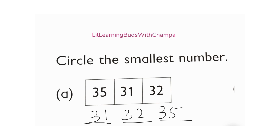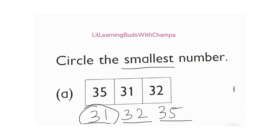Okay, so which one is the smallest — 31, 32, or 35? 31! Yeah, so 31 is the smallest number.